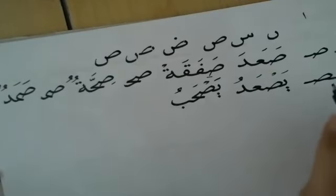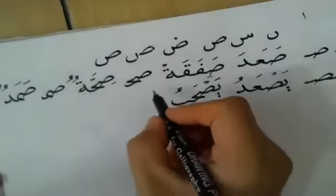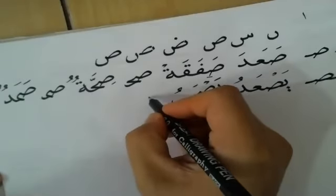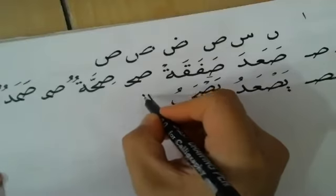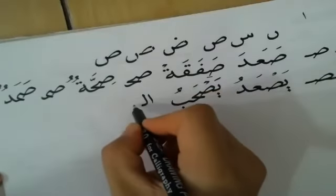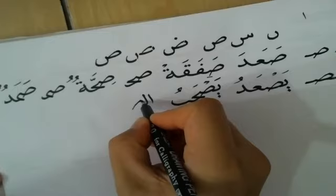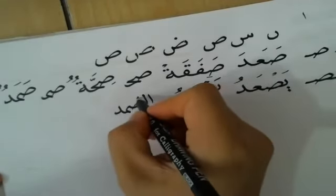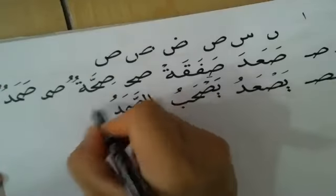Kemudian kalau huruf Sod di tengah yang jumpa dengan Mim, sama dengan yang pertama tadi. Contoh misalnya kita buat kata As-Solamat. As-Solamat, sama.